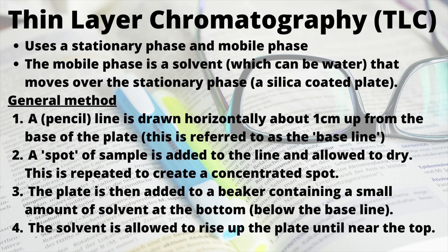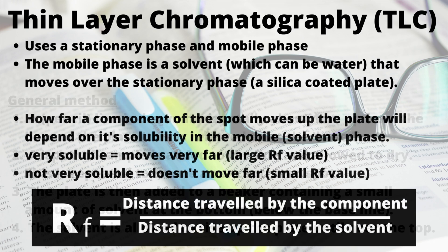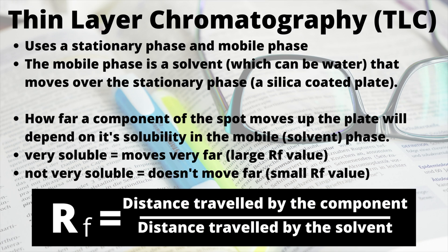The plate is then added to a beaker with a small amount of solvent at the bottom, which must not cross the baseline. The solvent will then start to rise up and naturally cross the baseline as it moves across the TLC plate. You will then see the different components of the mixture start to separate out and travel up the plate. We allow the solvent to get close to the top but not leave the plate — we call this point the solvent front. The finished plate is referred to as the chromatogram.